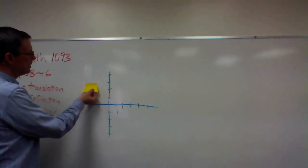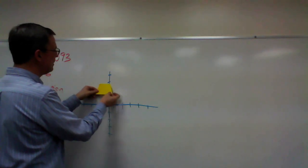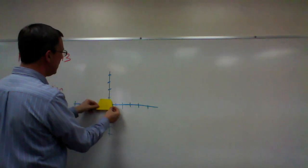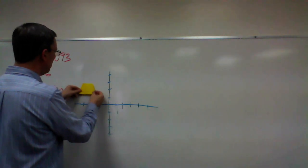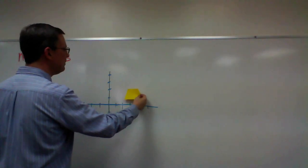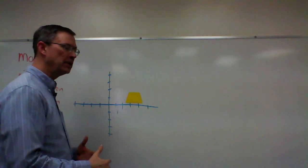So translation would be taking a shape and sliding it, maybe just over or maybe sliding it over and down, or maybe just down. But it keeps its same orientation, just lands in a different spot.